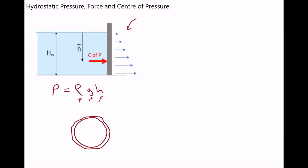If we wanted to determine the force resulting from the hydrostatic pressure, then we would need to take the average pressure, or the pressure halfway down our retaining wall, and then multiply by the cross-sectional area in contact with the fluid. So therefore the thrust force, which acts horizontally, is one half rho g H — that's the hydrostatic pressure halfway down the retaining wall — multiplied by the area of the wall in contact with the fluid.